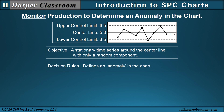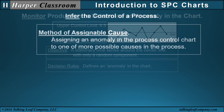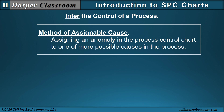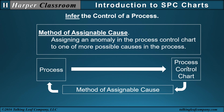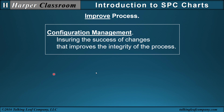Once we have defined an anomaly in the chart, the next step is to infer the control of a process. This includes the method of assignable cause — assigning an anomaly in the process control chart to one or more possible causes in the process — linking the chart back to the process so we can identify areas of improvement. The next step is to actually improve the process.